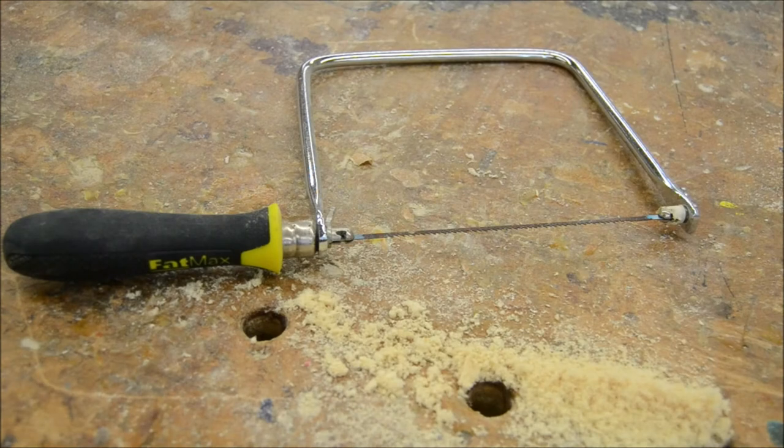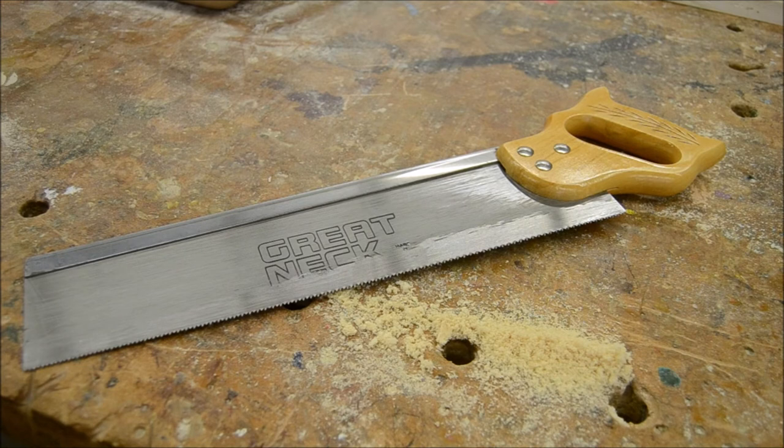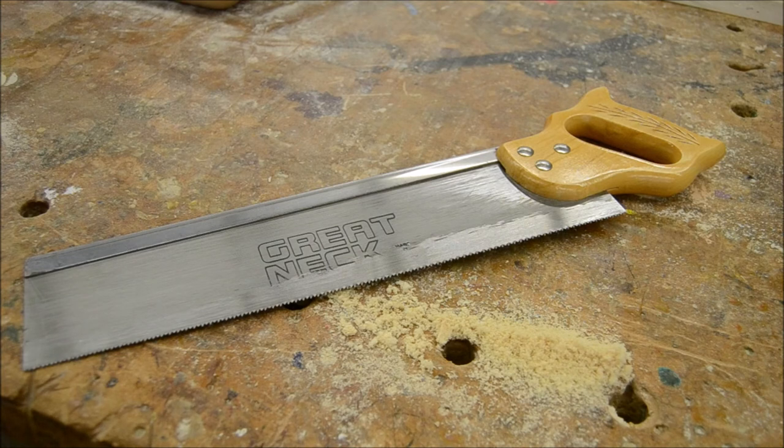Here's the coping saw. We're going to use it for all of our curved cuts. This is a back saw. We're going to use this for all of our cross cuts, meaning these are cuts that are straight and go against the grain of the wood. You're going to be using this in conjunction with the bench hook.